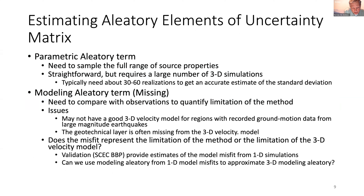The parametric aleatory term is the most straightforward — we're just sampling the range of source inputs — but you need a lot of realizations to get an accurate standard deviation. Typically 30 to 60 realizations of a random process are necessary to get an accurate estimate of a standard deviation.